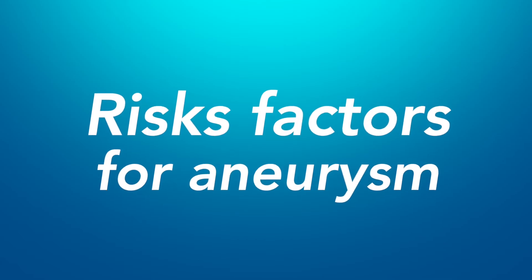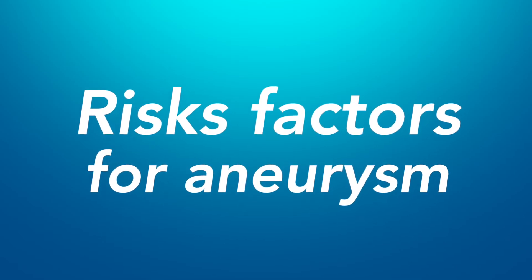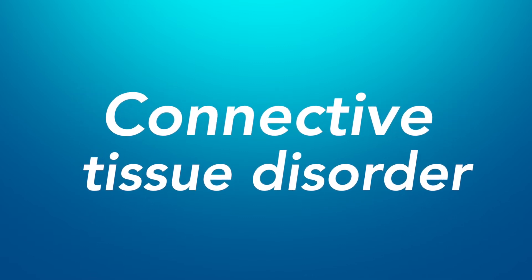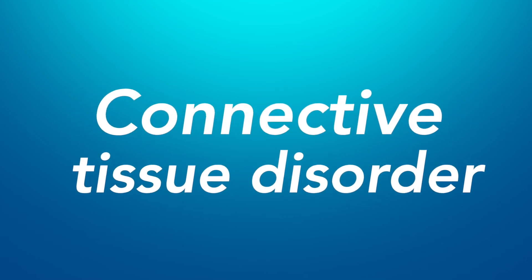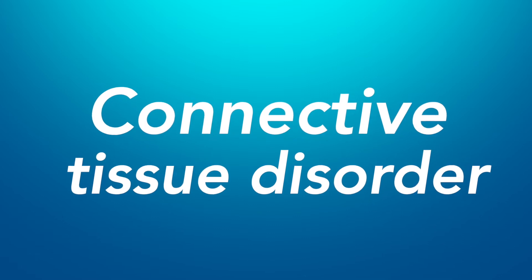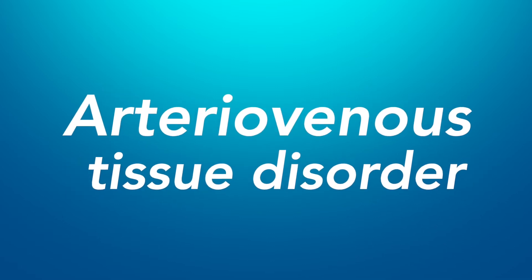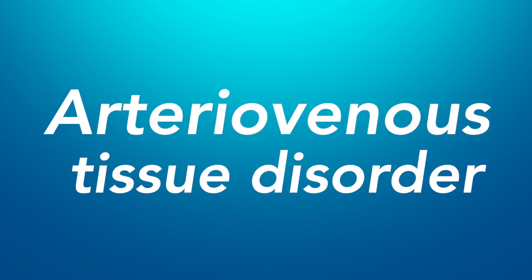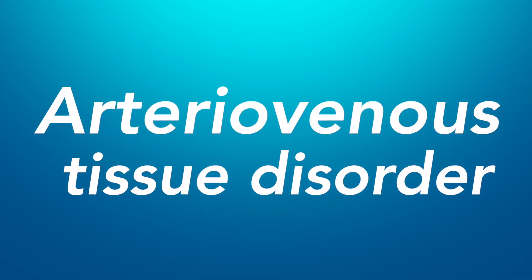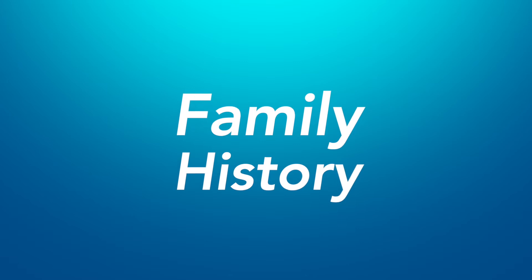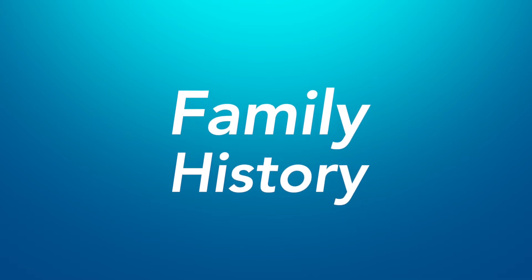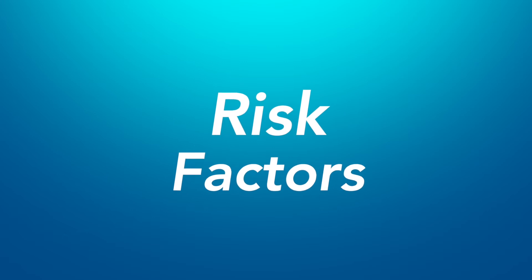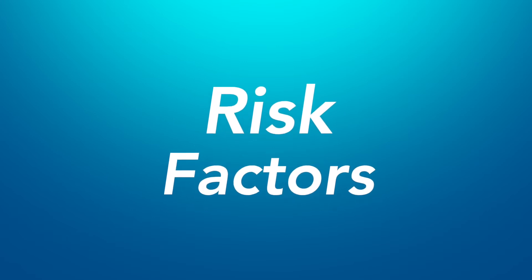What are some risk factors for developing an aneurysm? Some aneurysms come from an inherited connective tissue disorder that weakens the artery walls. Something called an arteriovenous malformation, or tangles of arteries in the brain, can lead to aneurysms. A history of aneurysm in a first-degree family member also increases your risk. Other risk factors develop slowly over time.